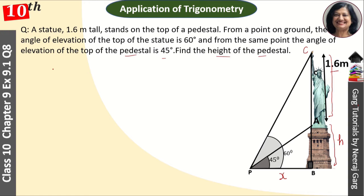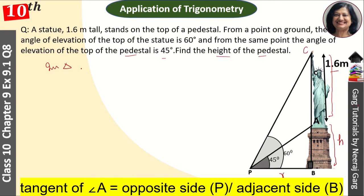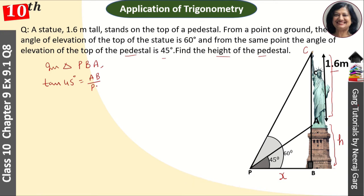First of all, we have taken triangle PBA. In this triangle, tan of 45 degrees equals AB upon PB. Tan 45 degrees value is 1, and AB we have taken as H and PB is x. So H is equal to x. This is the relation between H and x.